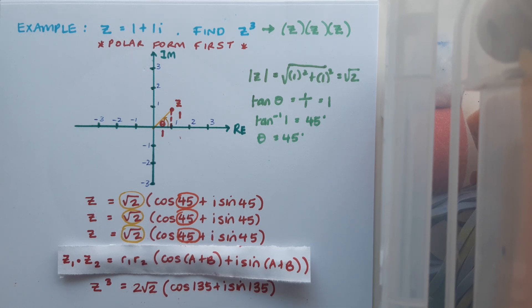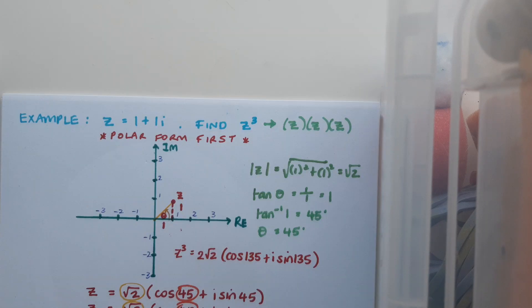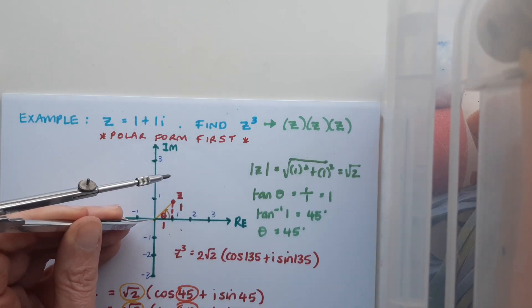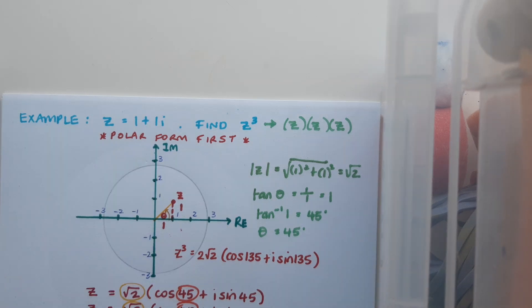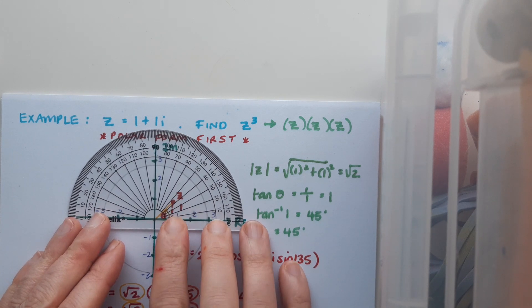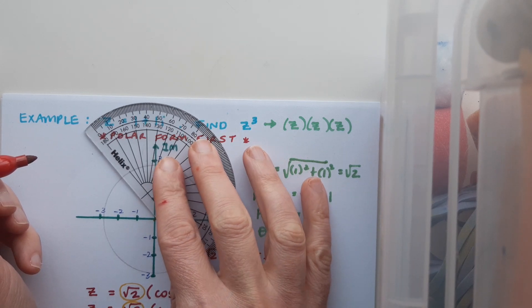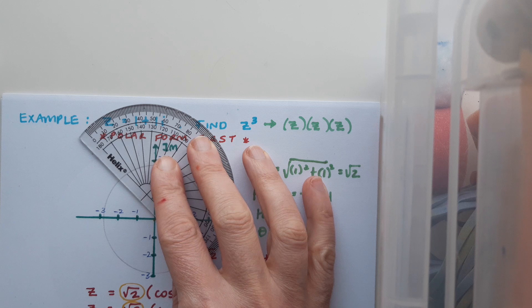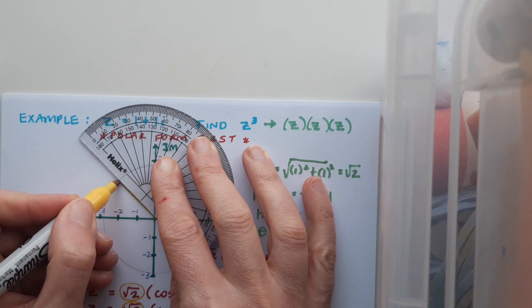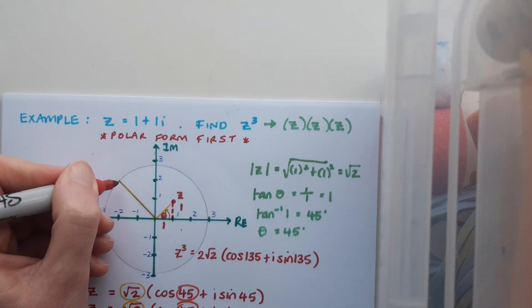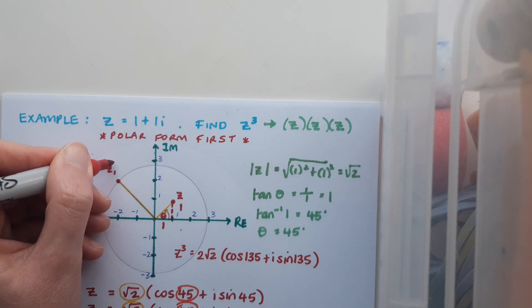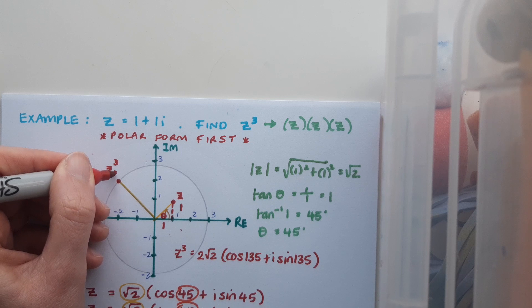And just to hark back to what we did at the very beginning of this video, let's just look at the location visually of where that z cubed is. So I've measured a distance of 2 root 2 on my compass. I'm putting my point at the origin, drawing a circle of radius 2 root 2. Now I'm going to use my protractor to figure out exactly where I should locate z cubed. I want an angle of 135 degrees. When I line that up, I can draw in that line because that's my modulus. That's the point where z cubed is located.